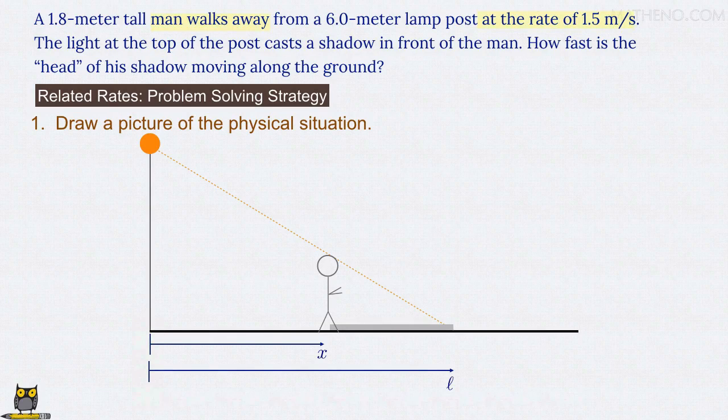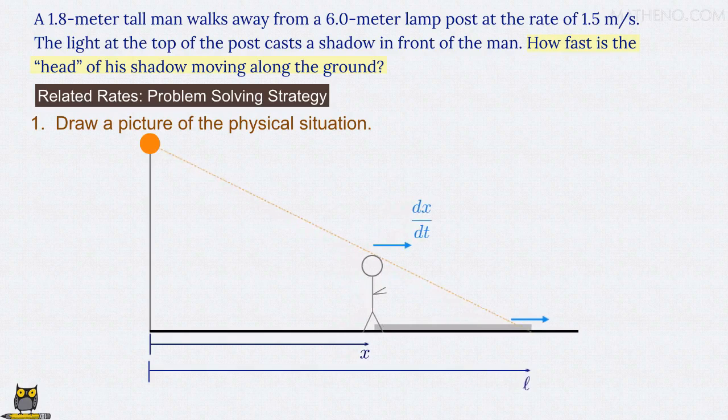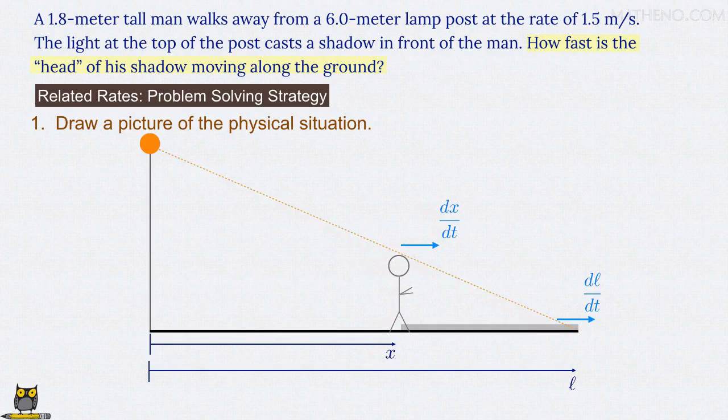As the man walks, his x position changes at the rate dx/dt, the rate at which x changes with respect to time t. We're looking for the rate at which the position of the shadow's head moves along the ground, which is dl/dt, the rate at which l changes with respect to time t.